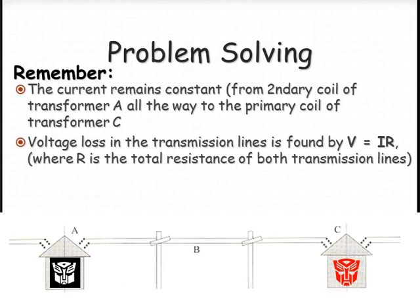So voltage loss, the amount of voltage consumed, equals IR. So you can find the voltage loss by multiplying current by the resistance in the wires.